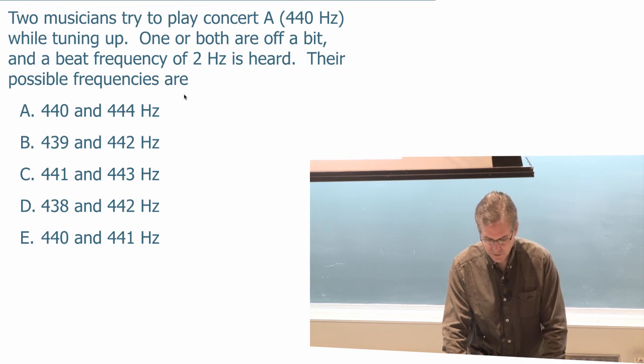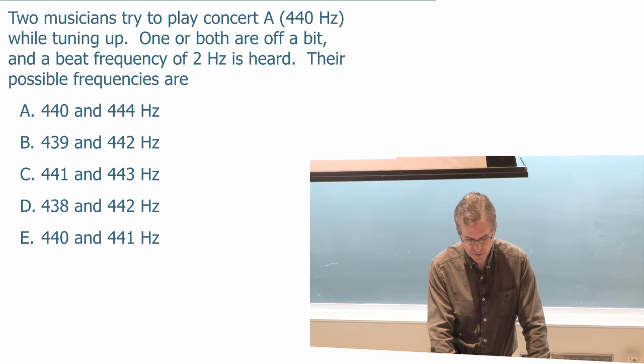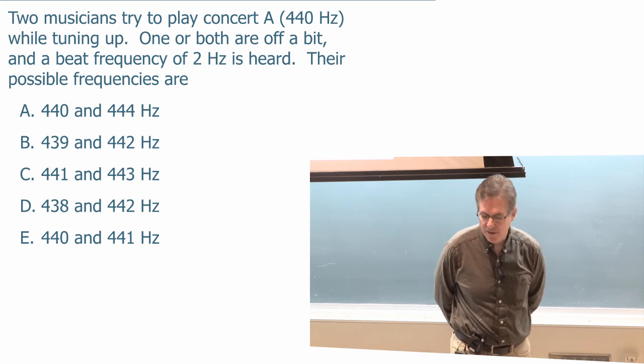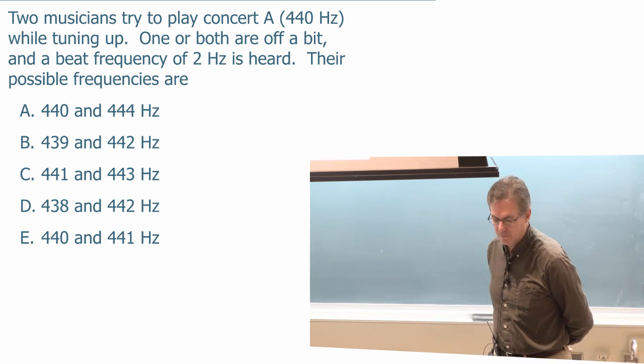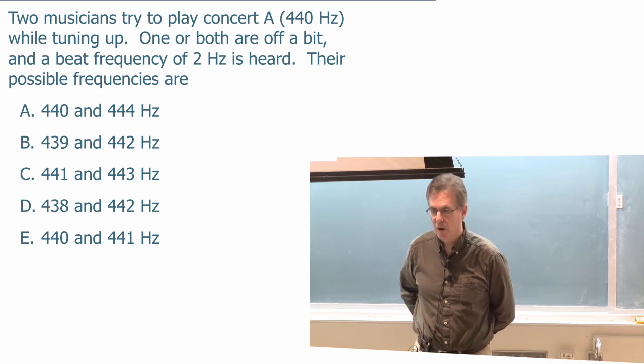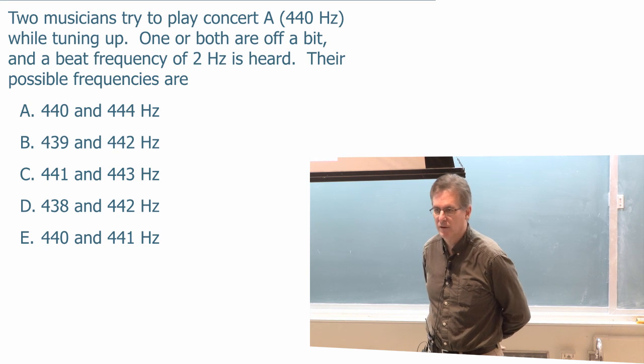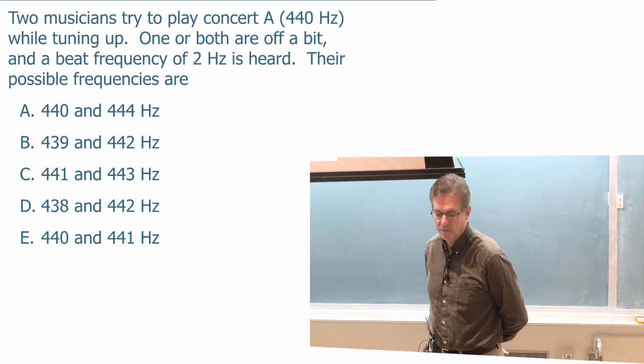So let's do a clicker question. Lightning clicker question. Which is basically were you listening on the last slide? Two musicians try to play a concert A 440 Hertz while tuning up. One or both of the musicians is off a little bit. And a beat frequency between their tones of two Hertz is heard. Their possible frequencies are what? What set of two frequencies could give you a beat frequency of two Hertz?